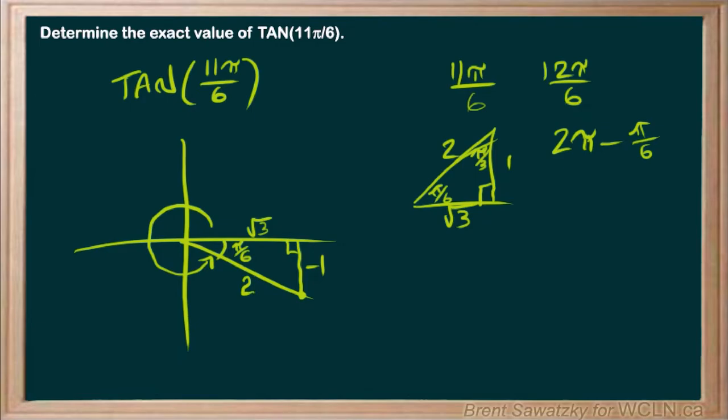We have it set out quite nicely, and we can look at that and say that tan 11 pi over 6 is going to equal tan opposite over adjacent. So, the opposite is our minus 1, and the adjacent is our root 3.